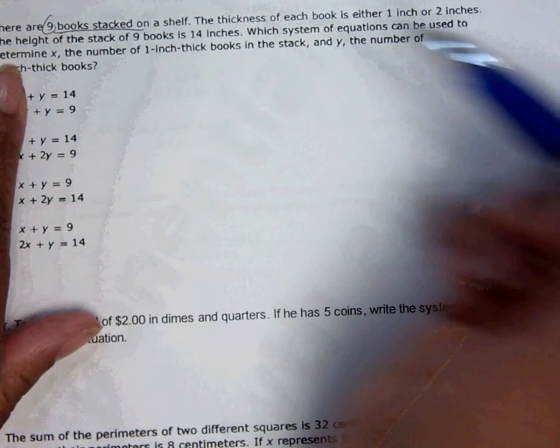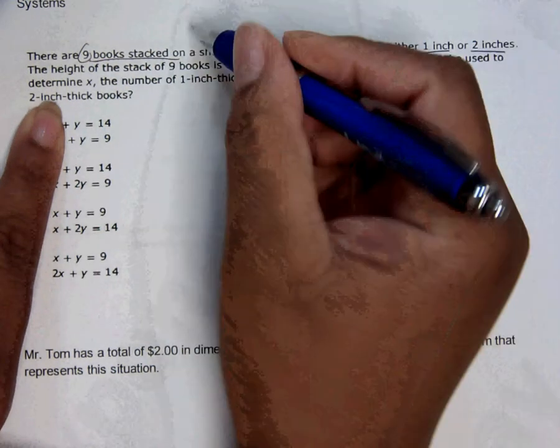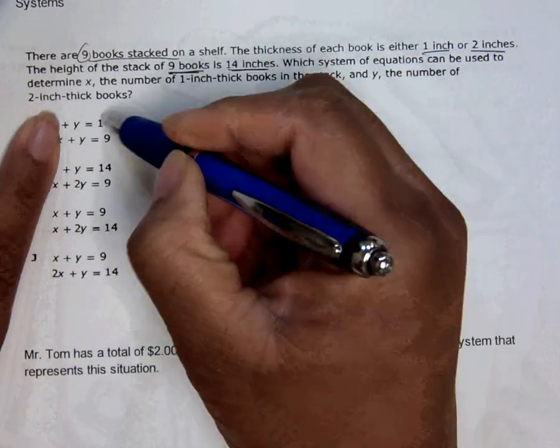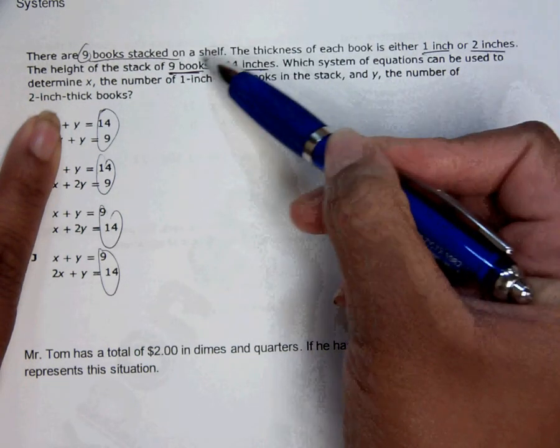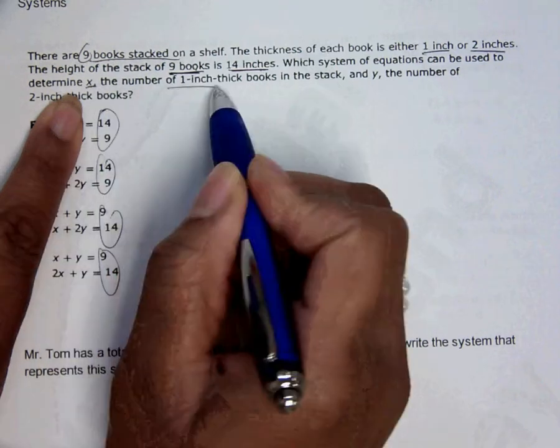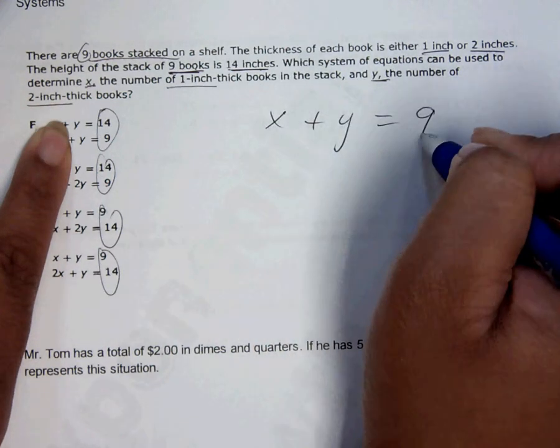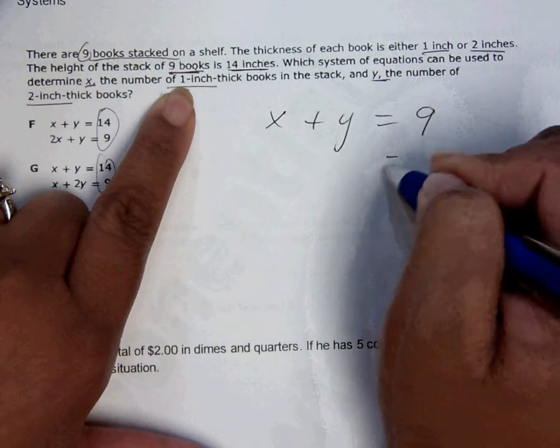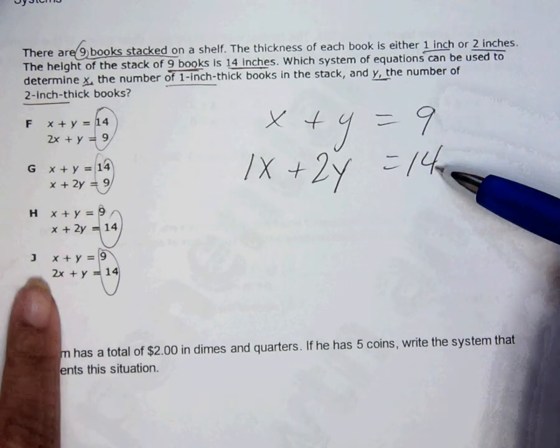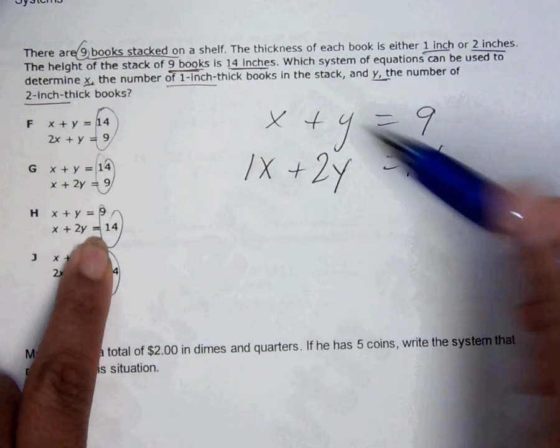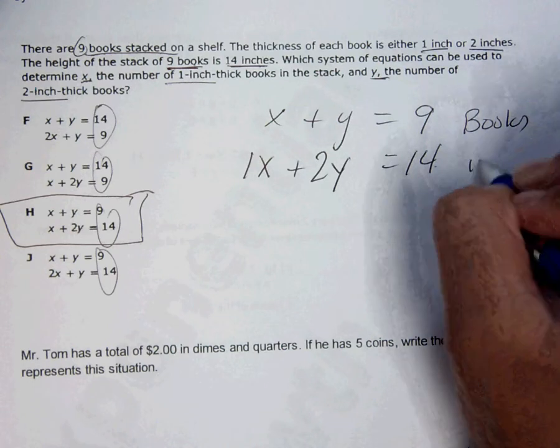I have 9 books that are stacked, and I know that the thickness of each book is either 1 inch or 2 inch. So these 9 books have a height of 14. Well, 14 and 9 are my totals. So one equation is supposed to talk about the thickness and the other one is going to talk about how many books. Well, X is 1 inch and Y is 2 inches. So if I do X plus Y, I'm going to add up how many books I have. But if I want to talk about the inches, it's going to be 14. So which one does that correctly? 1X plus 2Y equals 14, X plus Y is 9. The answer is H.